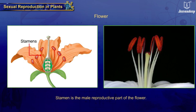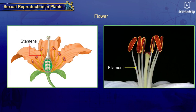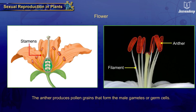Stamen is the male reproductive part of the flower. A stamen has a long stalk called the filament with a usually bilobed structure called the anther at the tip. The anther produces pollen grains that form the male gametes or germ cells.